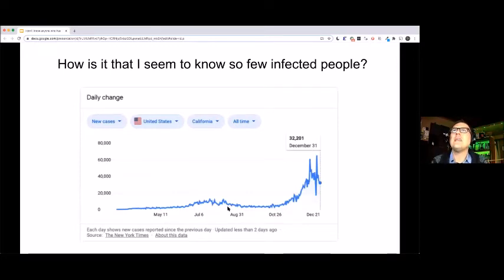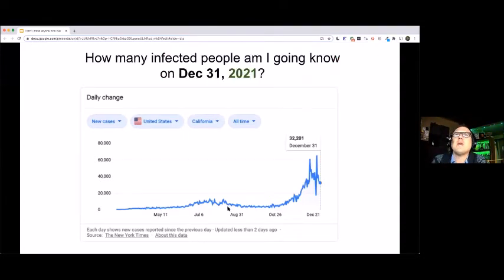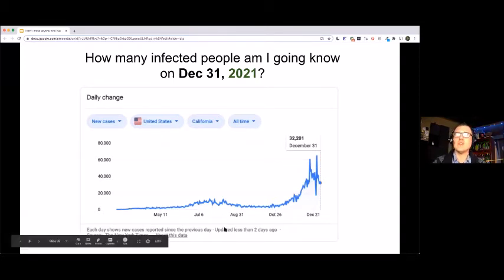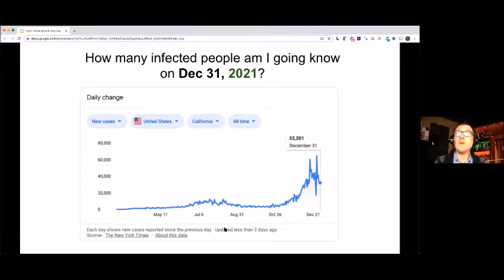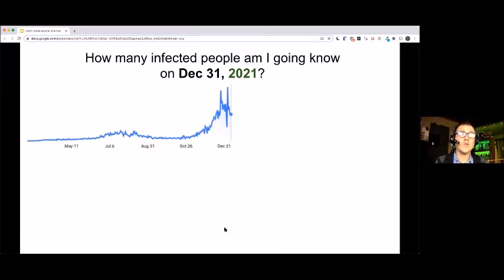How is it that I seem to know so few infected people when in fact we're going through arguably our second major surge here in the US? Well, maybe I should reframe that again and say, let's look to the future. I can walk you through what is likely to happen over the next year. What can we say about where things are going? What can we learn from the historical data and the trends here? So fast forward a year from now, how many infected people am I going to know?